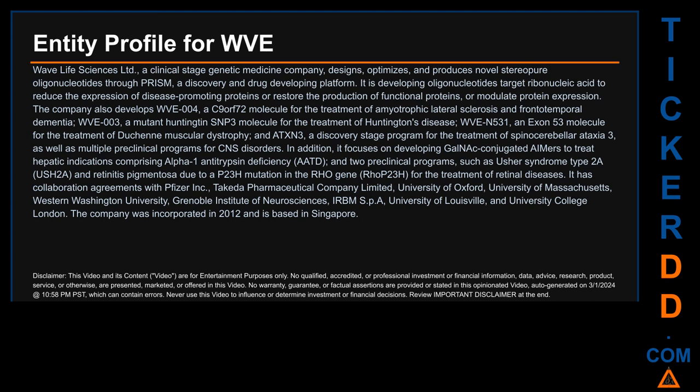The company develops WVE-004, a C9orf72 molecule for treatment of amyotrophic lateral sclerosis and frontotemporal dementia; WVE-003, a mutant huntingtin SNP3 molecule for Huntington's disease; WVE-N531, an exon 53 molecule for Duchenne muscular dystrophy; and ATXN3, a discovery-stage program for spinocerebellar ataxia 3. It also focuses on GalNAc-conjugated siRNAs to treat hepatic indications including alpha-1 antitrypsin deficiency (AATD), Usher syndrome type 2A (USH2A), and retinitis pigmentosa due to the RHO P23H mutation.